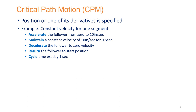Generally, in the case of critical path motion, position or one of its derivatives is specified. Let's start with an example where we are not concerned about position per se, but about velocity. There is one phase in one segment with the requirement to have constant velocity. Constant velocity is required for one of the segments in the motion profile.